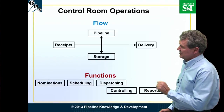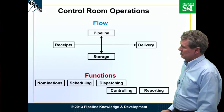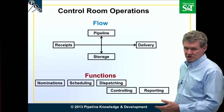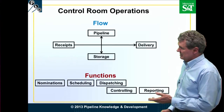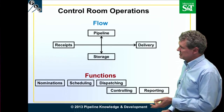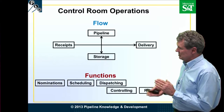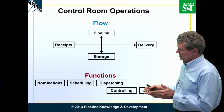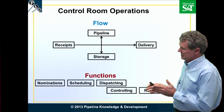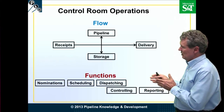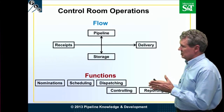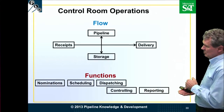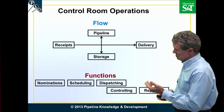If we look at the functions that are performed in the control room starting on the left, we have nominations — the shippers tell us what they want to move. Scheduling: how we're going to line these batches up, what we're going to take in, what types of deliveries we're going to make, and the details of how we're going to make it happen. Controlling: making it happen. And then finally, reporting — what is going on and keeping track.